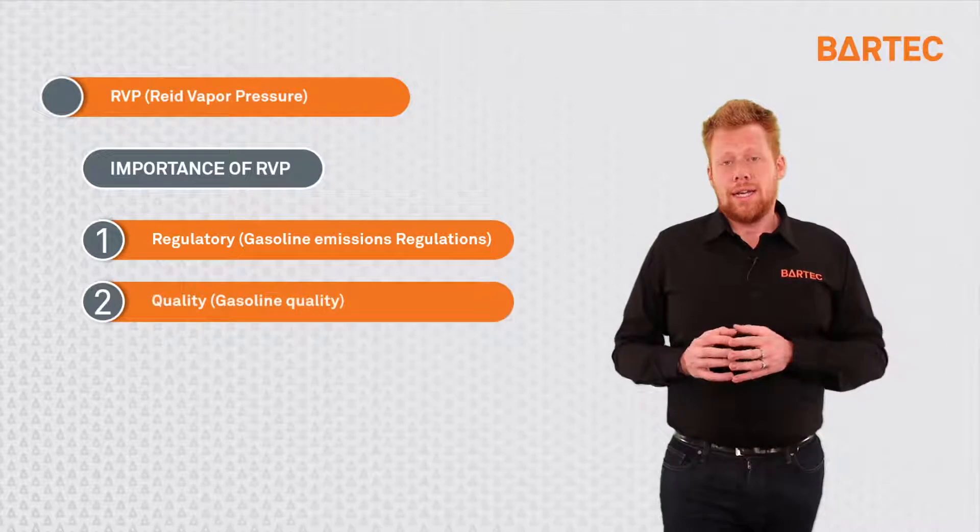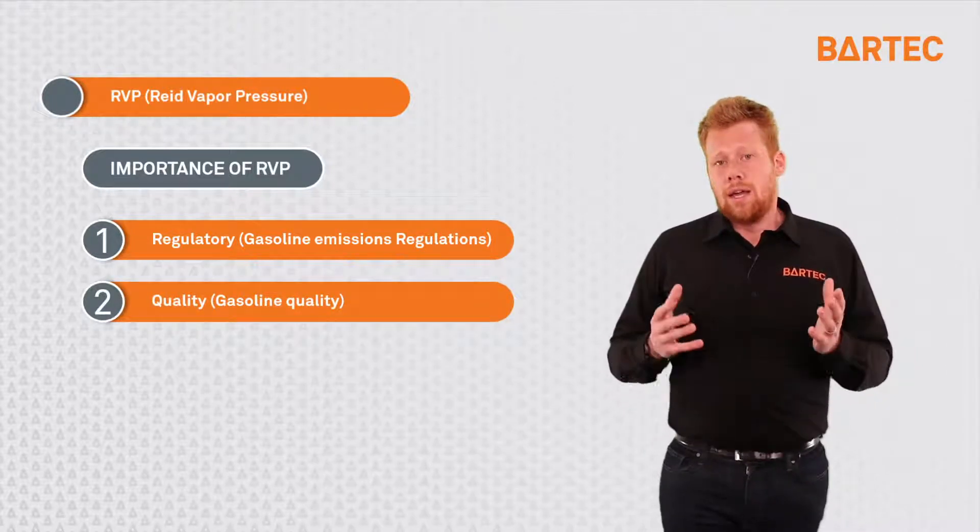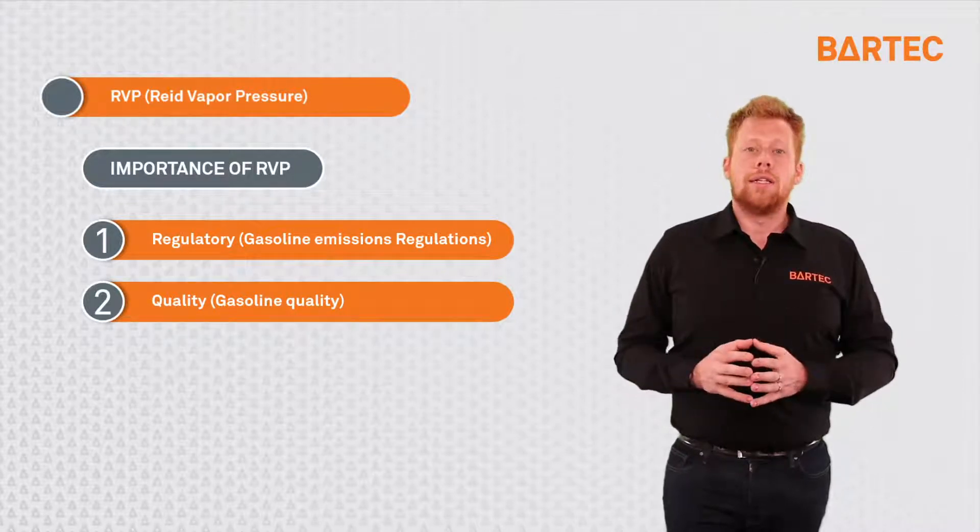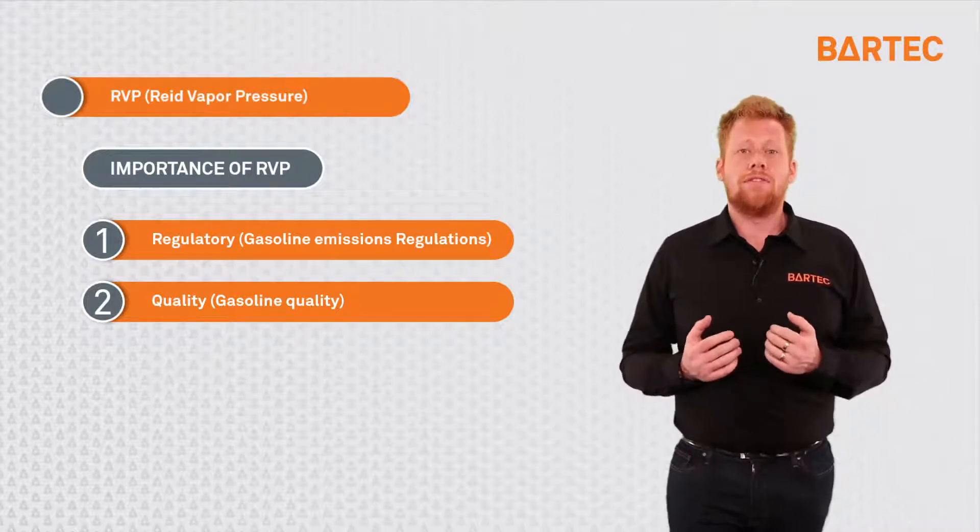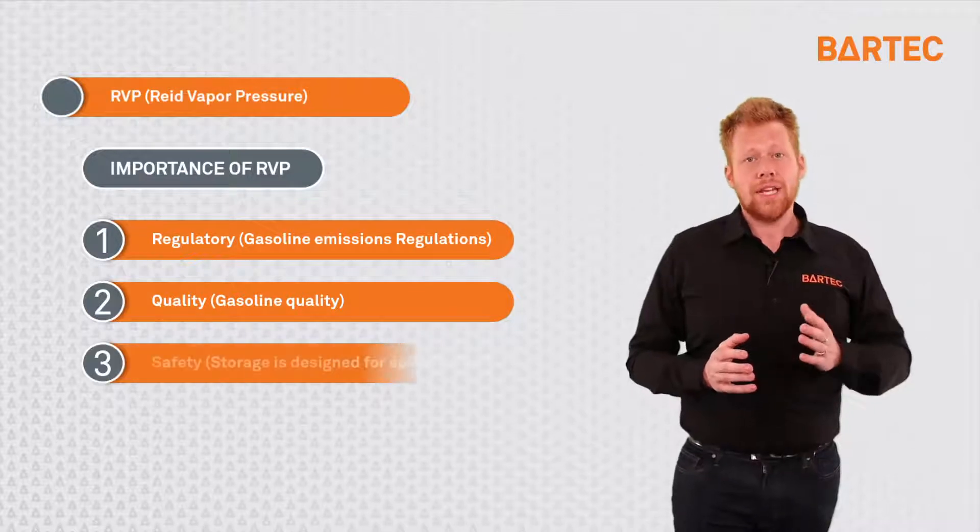The second reason is a quality reason. If we take the example of gasoline again, for an engine, a gasoline engine to run properly, the RVP of gasoline must be at a specific point. If the RVP is too high or too low, the engine does not run right.